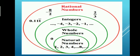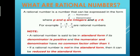Next come rational numbers. A rational number is a number that can be expressed in the form p upon q, where p and q are integers and q is not equal to 0. The denominator can never be 0. For example, 7 upon 3, minus 5 by 7, and 2 upon minus 9 are all rational numbers.